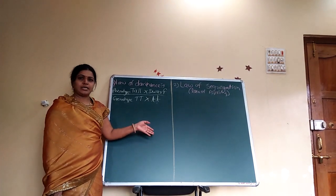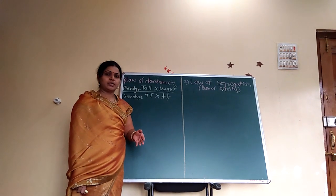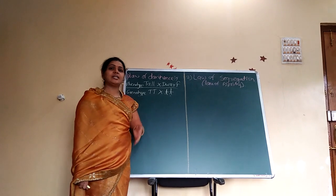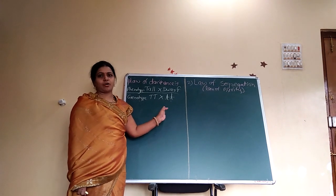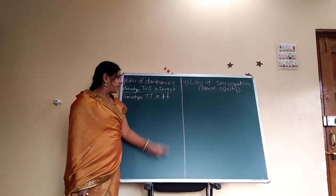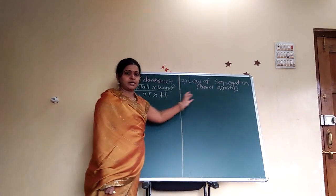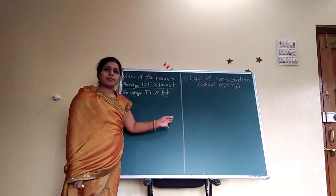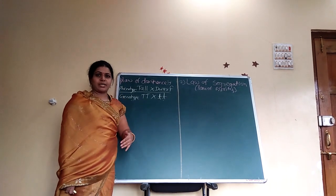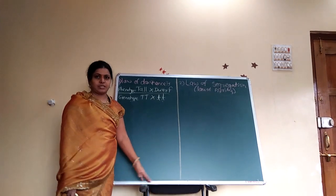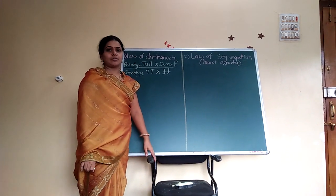The Mendelian law is the law of inheritance and law of dominance. To explain the law of dominance and also to explain the law of segregation, we use the method of the monohybrid cross. That means to explain the law of dominance, first we see what is the law of dominance.